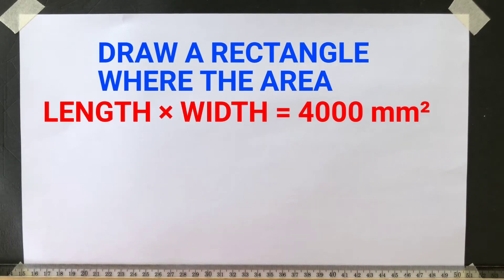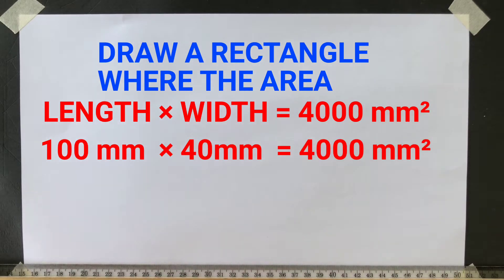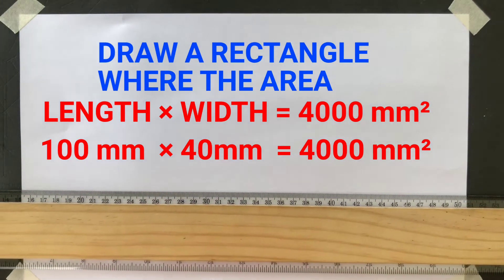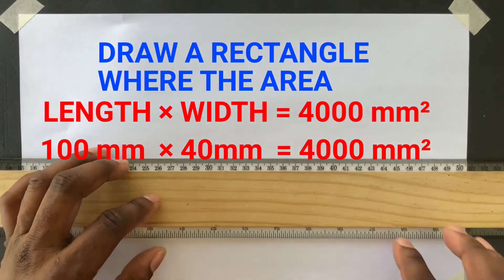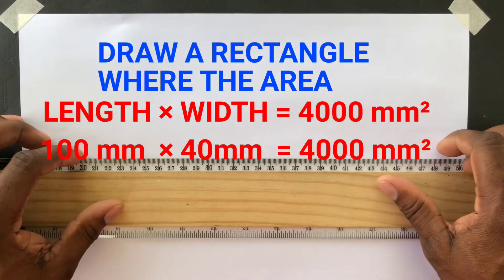First you need to draw a rectangle where the area of this rectangle is 4000 millimeters squared, using a length of 100 millimeters and a width of 40 millimeters. We will draw this required rectangle before we draw our triangle.